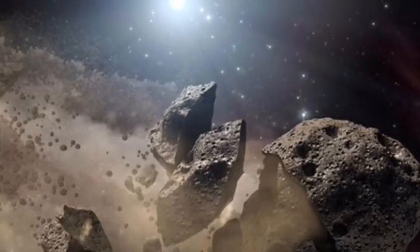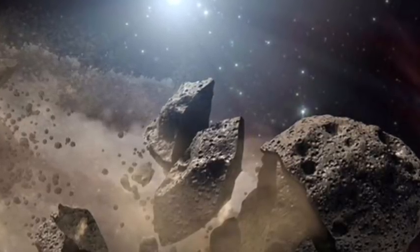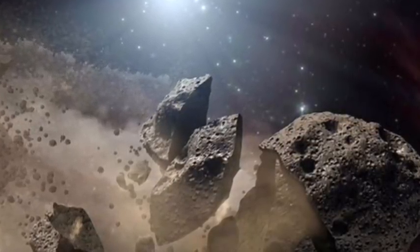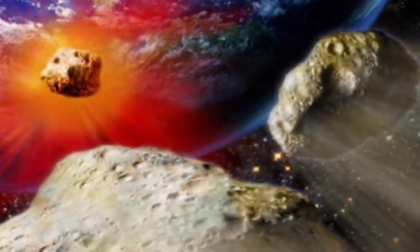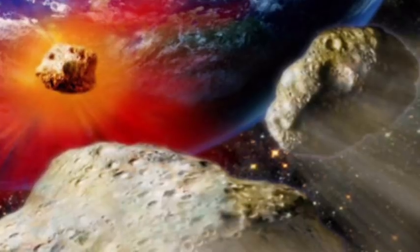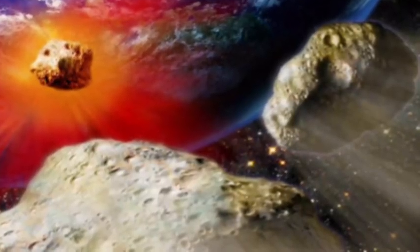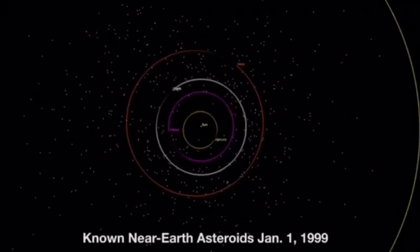The second and third asteroids will zip by the following day on Monday. The bigger of the two, asteroid 2015 FP 118, measures a staggering 1,148 feet (350 m) to 2,690 feet (820 m) in diameter according to NASA and the European Space Agency.